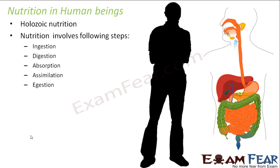Similar to any other holozoic nutrition, this nutrition will involve the same steps: ingestion, digestion, absorption, assimilation, and ejection. But since this is a complex multicellular organism, each of these steps is assigned to some specific set of organs. Cells group together to form tissues, tissues form organs, organs form organ systems — and every organ is given a specific job to do. So each step of nutrition is carried out by a specific organ.